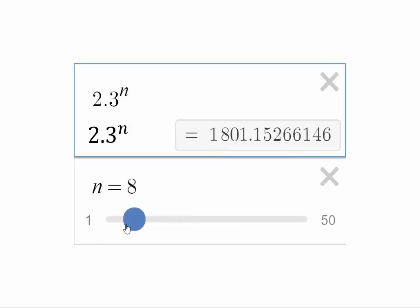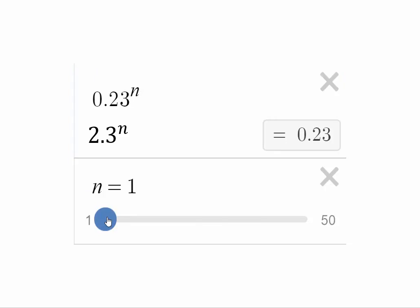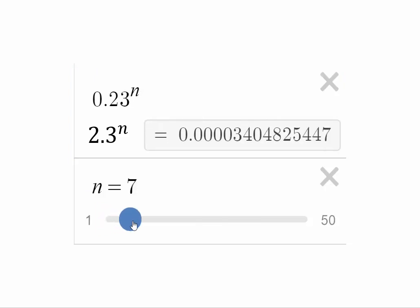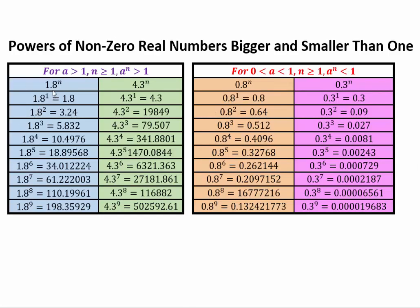Now let's change to 0.23 to power n. With n equal to 1 we get 0.23, and as we increase the power, the numbers just keep getting smaller. We can see the same with 1.8, 4.3, 0.8, or 0.3 to power n. The conclusion: if a number is bigger than 1 and you raise it to increasing powers, the numbers grow larger. But if the number is between 0 and 1, raising it to powers makes it even smaller than the original.